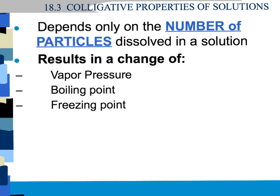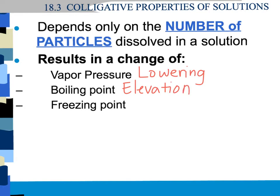Colligative properties depend on the number of solute particles in solution. It's going to change these three things: the vapor pressure, the boiling point, and the freezing point. The vapor pressure one we call vapor pressure lowering — the more particles, the lower the vapor pressure. The boiling point one we call boiling point elevation — the more solute particles, the higher the boiling point. And the last one we call freezing point depression, because more solute particles will lower or depress the freezing point.